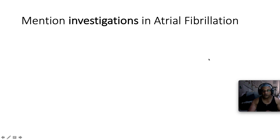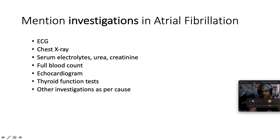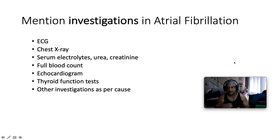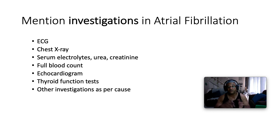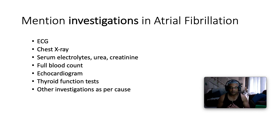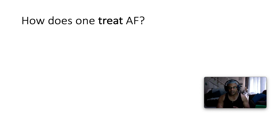What investigations would you want to do in a patient with atrial fibrillation? Start with an ECG to confirm AF: absent P waves, irregularly irregular QRS complexes, and possible stigmata of hypertension or left atrial enlargement in mitral stenosis. Chest X-ray to check for cardiac abnormalities such as cardiomegaly and changes of mitral stenosis. Serum electrolytes, urea and creatinine, especially in the context of heart failure to exclude cardiorenal syndrome. Full blood count to exclude infection, anemia, and thrombocytopenia. Echo to assess the heart structurally — valves, pericardium, and myocardium. Thyroid function tests to rule out thyrotoxicosis, and other investigations as per the cause.